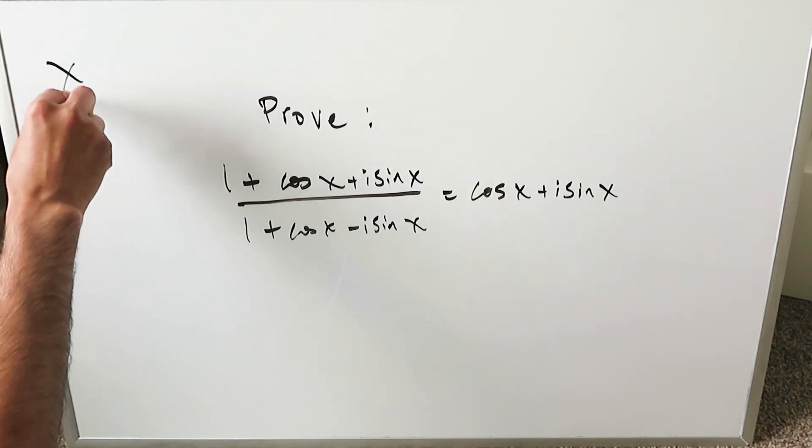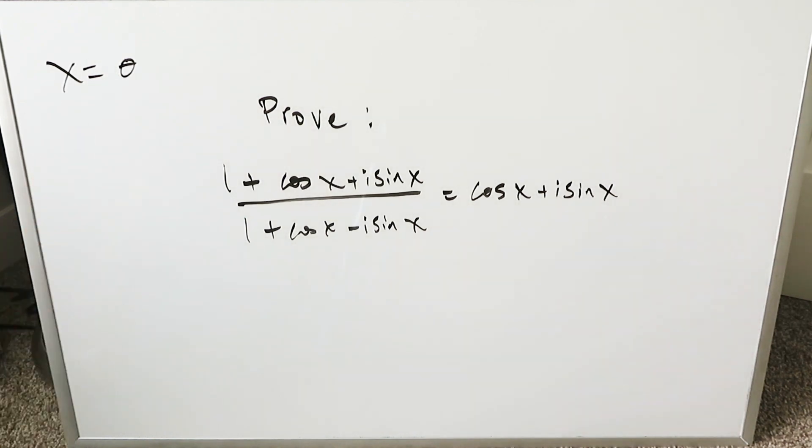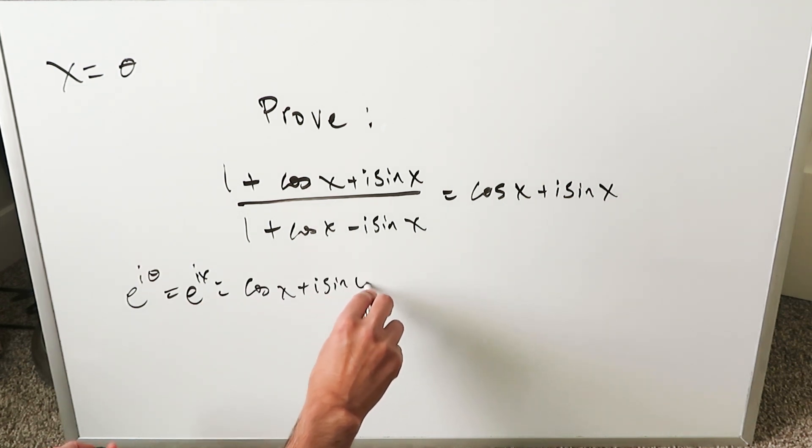For this video, understand that wherever you have x, you could have easily put theta. X and theta are interchangeable; I'm just using x. This will require Euler's identity: e^(ix) or e^(iθ), either one is fine, always equals cos x + i sin x.